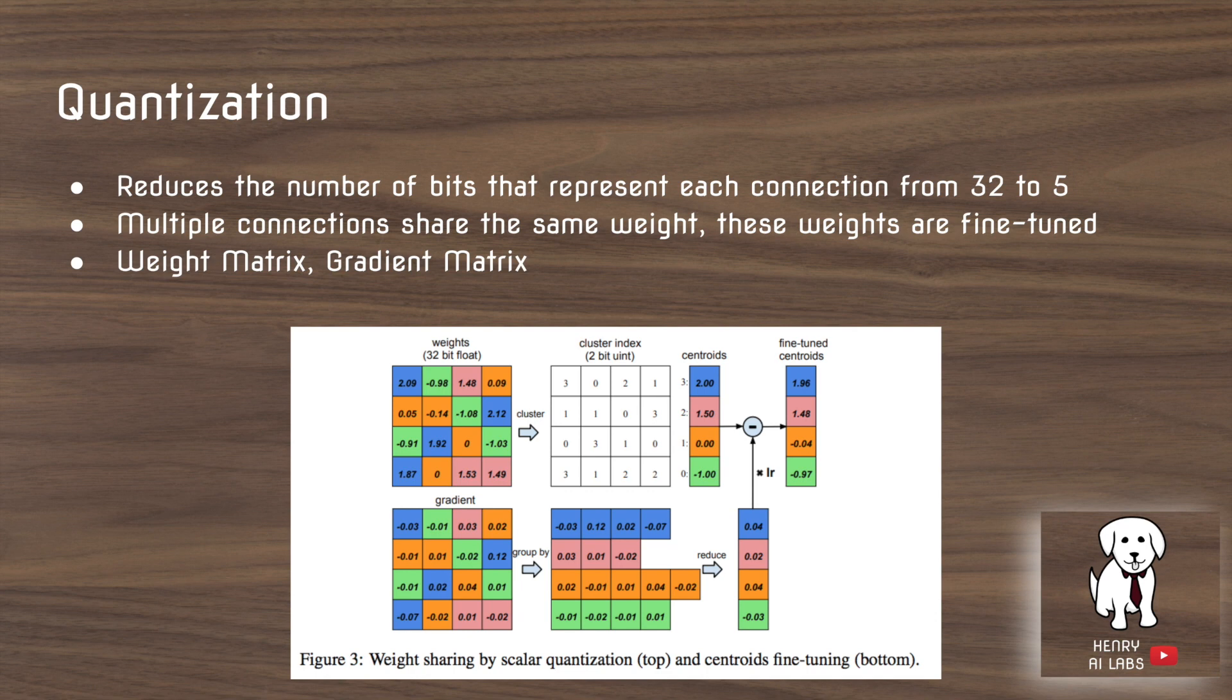They can now represent all the weights in the network with like 3 bits because if you have 3 bits you can represent 8 weights, 2 to the 3. And they would set every weight in the network to be one of these quantized weights from the code book.